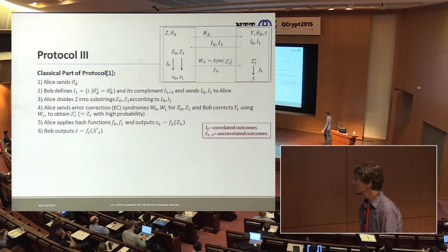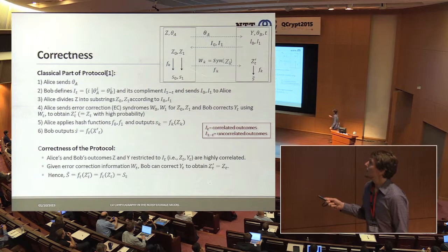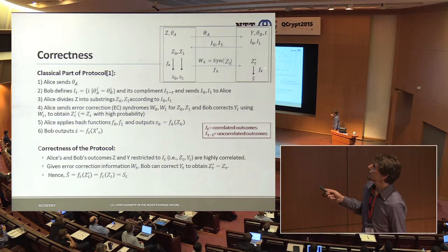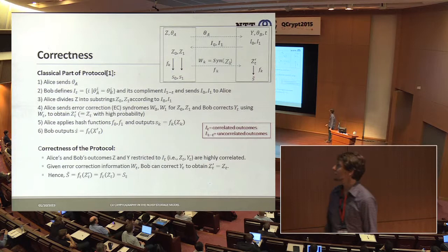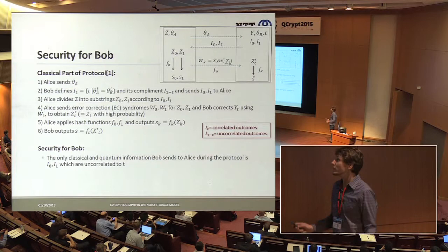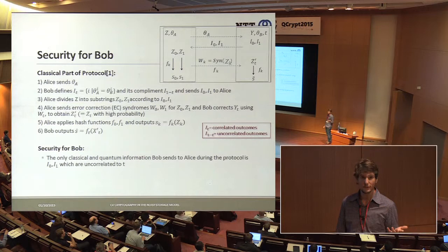Correctness follows because, given the error correction works, the two strings C_T and C-tilde_T are the same with high probability, so the outcomes will be the same. Security for Bob is also easy, because he only sends the two index sets, which are completely uncorrelated to his choice bit.